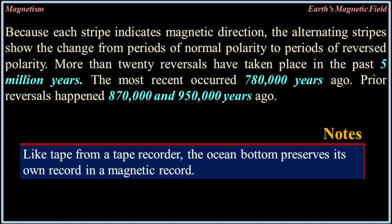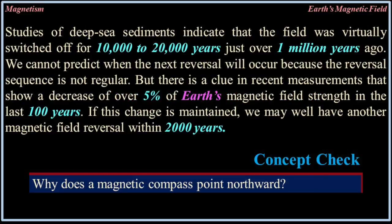Like tape from a tape recorder, the ocean bottom preserves its own record in a magnetic record. Studies of deep sea sediments indicate that the field was virtually switched off for 10,000 to 20,000 years just over 1 million years ago. We cannot predict when the next reversal will occur because the reversal sequence is not regular. But recent measurements show a decrease of over 5% of Earth's magnetic field strength in the last 100 years. If this change is maintained, we may well have another magnetic field reversal within 2,000 years.